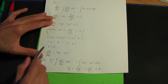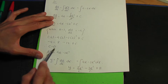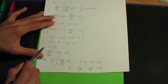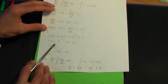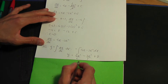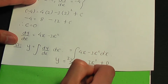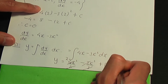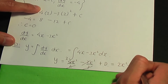Simplifying: 2 goes into 4 twice, and the two 3s cancel out, giving us y equals 2x² minus x³ plus d. This is the solution for y with the constant d still to be determined.